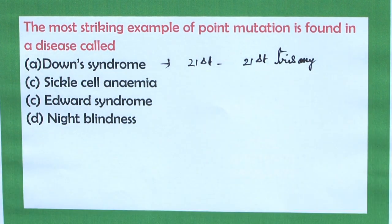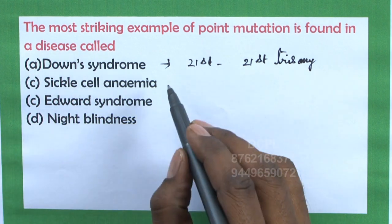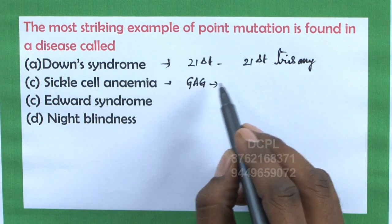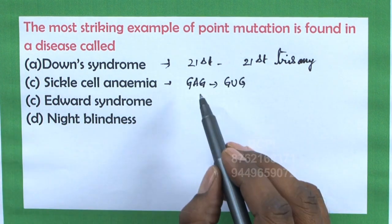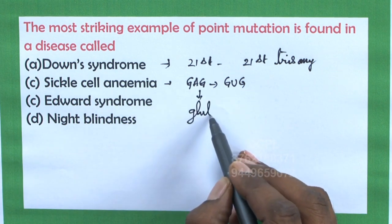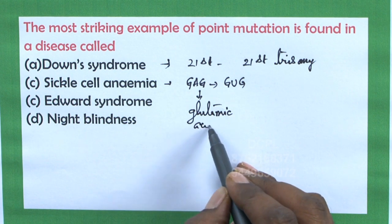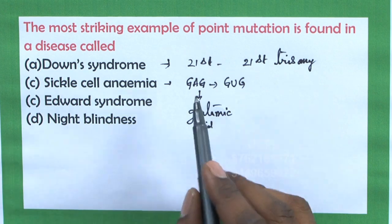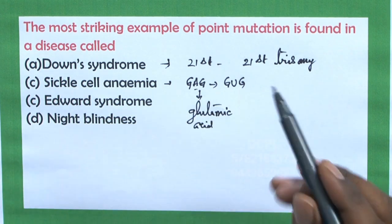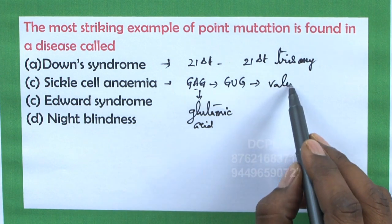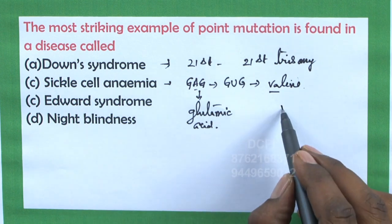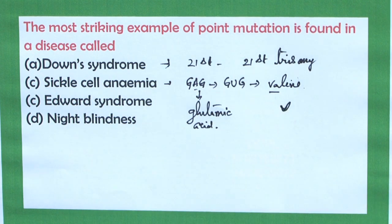Option B is sickle cell anemia. Sickle cell anemia is caused due to a point mutation from GAG to GUG. The beta-globin of the hemoglobin in the RBC is normal when GAG is present, but when adenine is converted to U, GUG codes for valine. Replacing glutamic acid with valine causes the disc-shaped RBC to become crescent-shaped, causing sickle cell anemia.